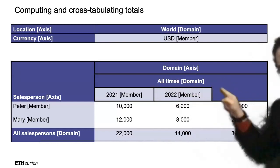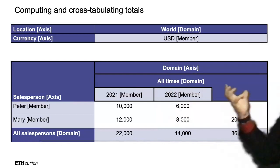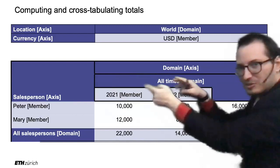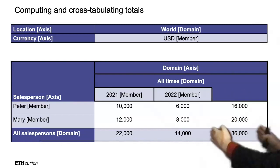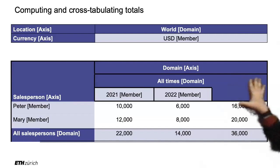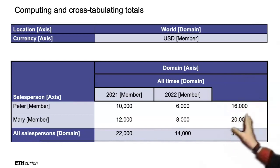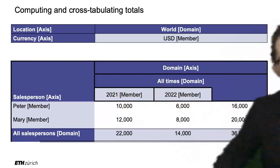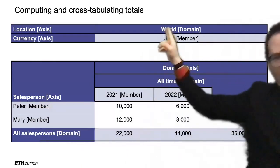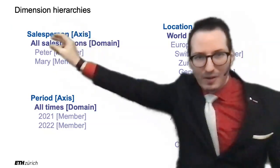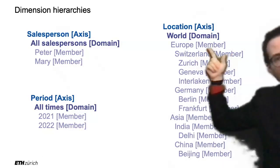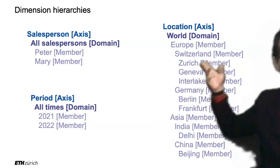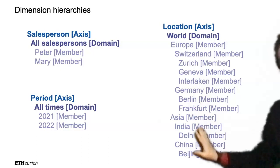You get an L-shape in the display where totals appear. This reflects hierarchies in the dimensions — 'all times' is the parent of 2021 and 2022, 'all salespersons' is the parent of Peter and Mary, 'world' is the parent of Germany and Switzerland. You can have multiple levels: world contains Europe, Asia, Africa, America; Europe contains Switzerland and Germany; Switzerland contains its cantons, even down to Gemeinde. Hierarchies are very important in data cubes and data warehousing — they enable powerful aggregation at multiple levels.